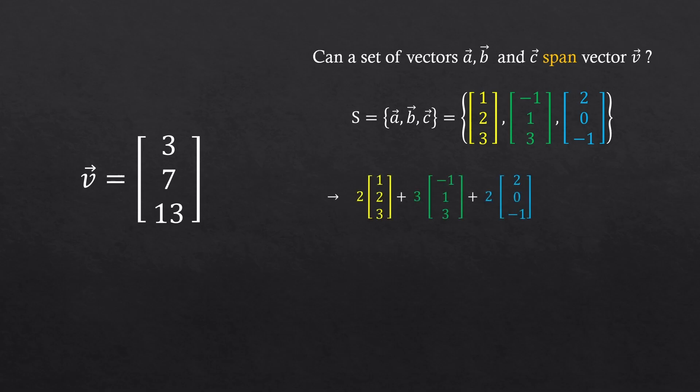Yeah, if we double the first vector, triple the second vector, and double the third vector, and then use them all, we can build the vector v.